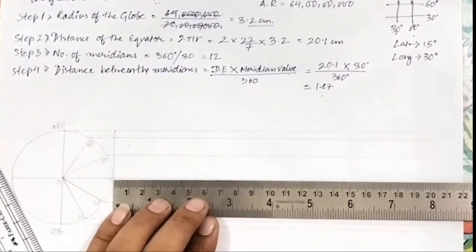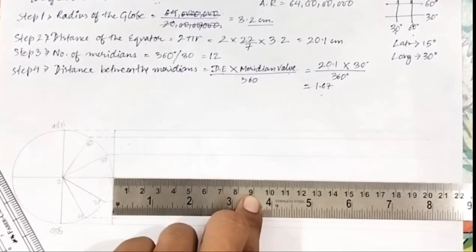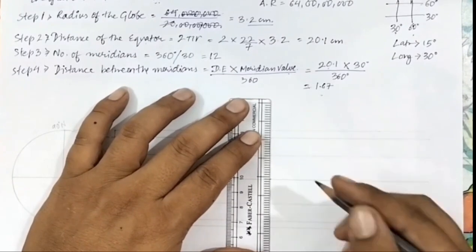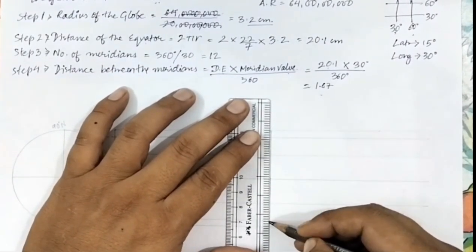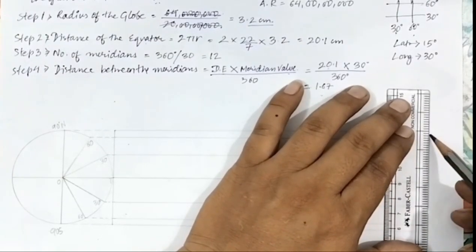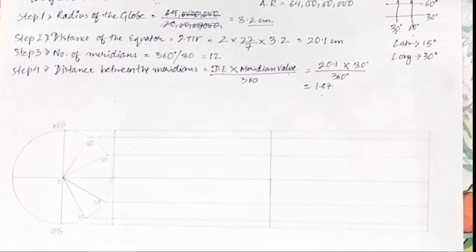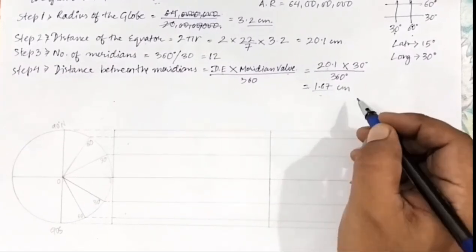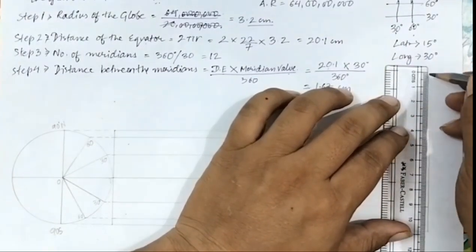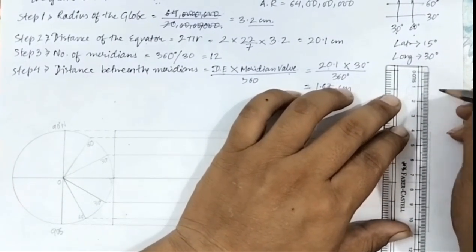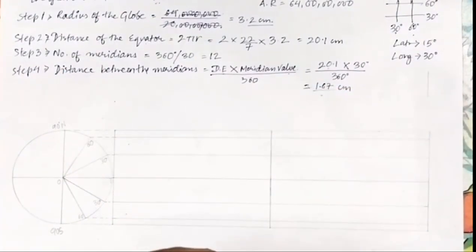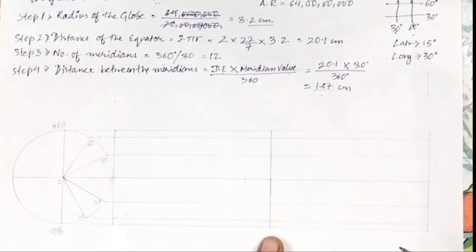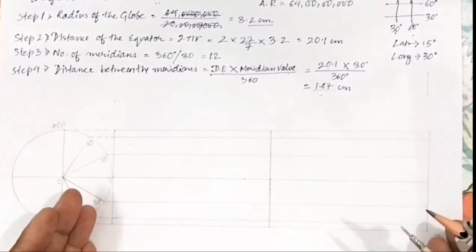Now it's time for meridians. The number of meridians is 12. Before drawing them, we have to divide the 20.1-centimeter line at the center, because that will act as our prime meridian. Join the line at the end as well since you have drawn it with the exact distance. The distance between meridians we calculated is 1.47 centimeters — open your compass, measure that distance, and place it at the prime meridian.